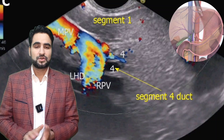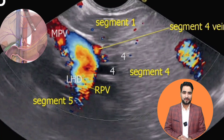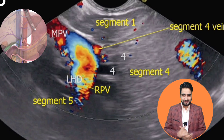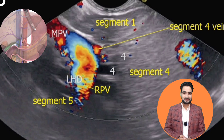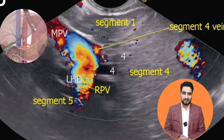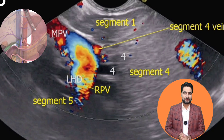With segment 1 sitting closest to the probe, on further clockwise rotation the right portal vein is now seen joining the left portal vein. This marks the transition point from the left hepatic system to the right hepatic system. The liver segment just below the plane of the right portal vein corresponds to segment 5. Since segment 5 is an inferior segment, it is located away from the probe. On endoscopic ultrasound at this position, structures away from the probe are displayed in the inferior part of the image.